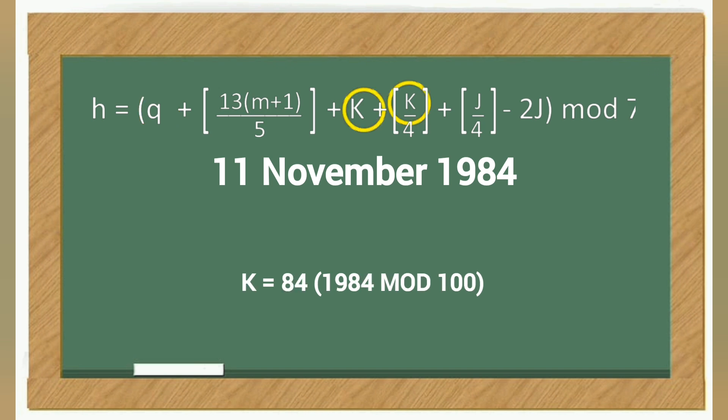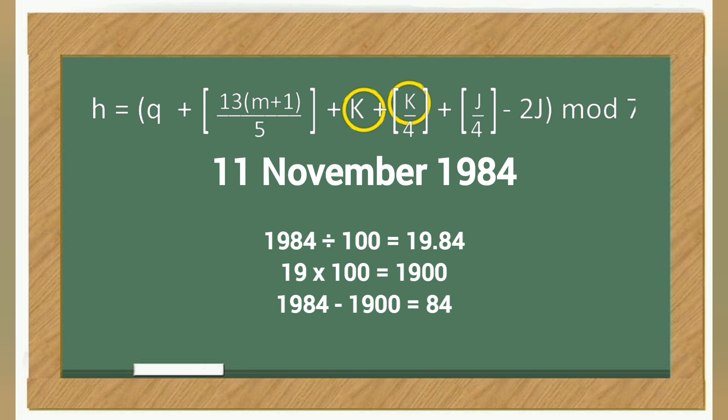The letter k stands for the year of the century, and to get that we'll need to calculate the mod of 1984. To manually get the result, divide 1984 by 100 and get the integer part of the result, in this case 19. Multiply it by 100 to get 1900, subtract 1900 from 1984 and we'll have 84.